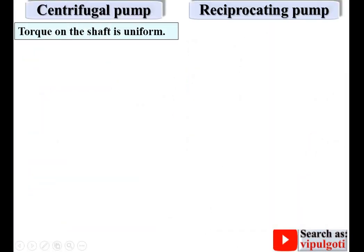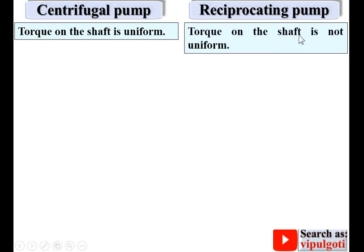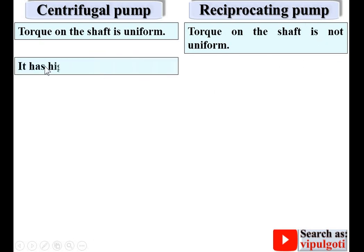Torque on the shaft is uniform in the centrifugal pump because of having only circular motion in one direction, whereas torque on the shaft is not uniform in the reciprocating pump because there is a to-and-fro motion, meaning the direction changes.